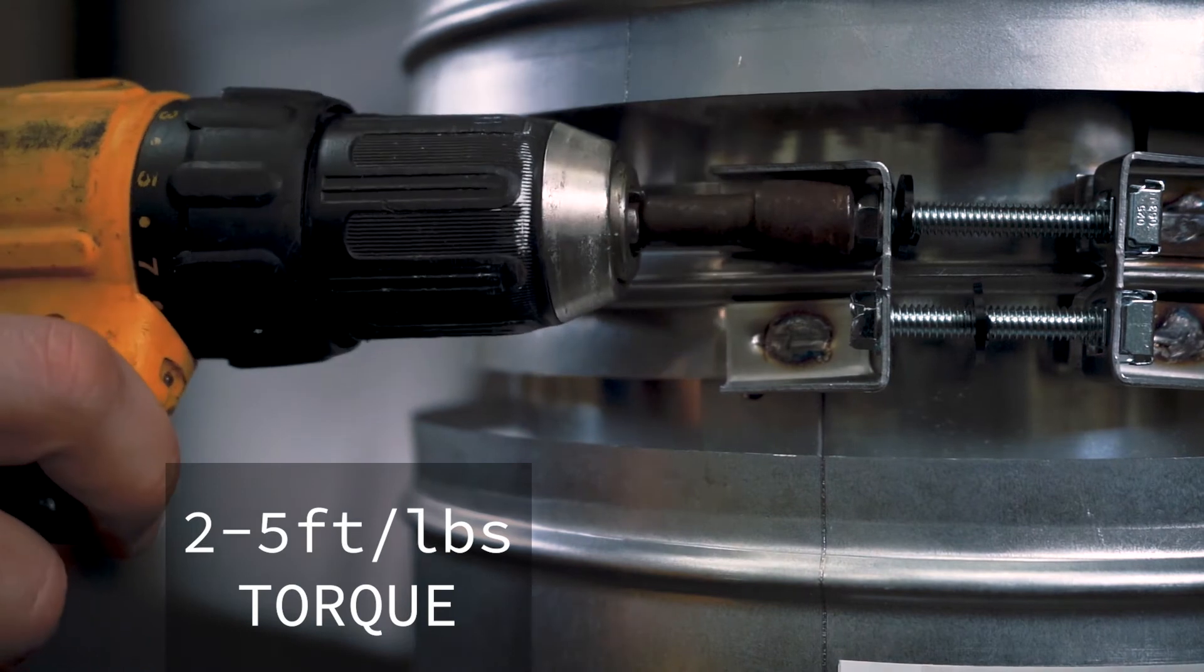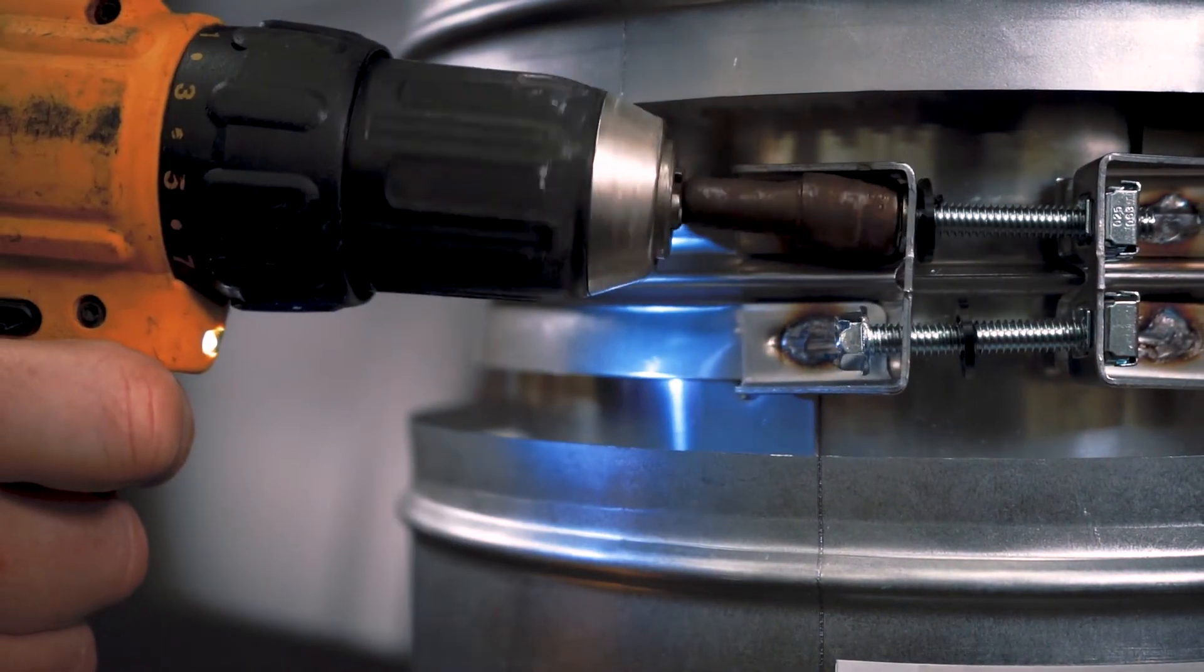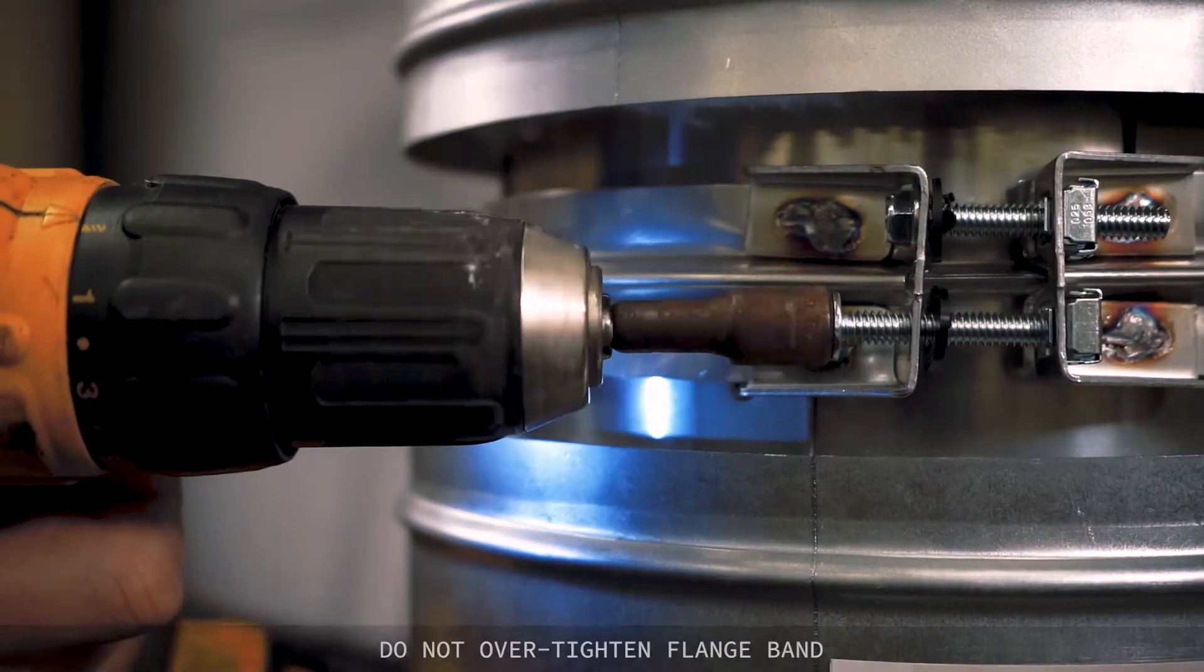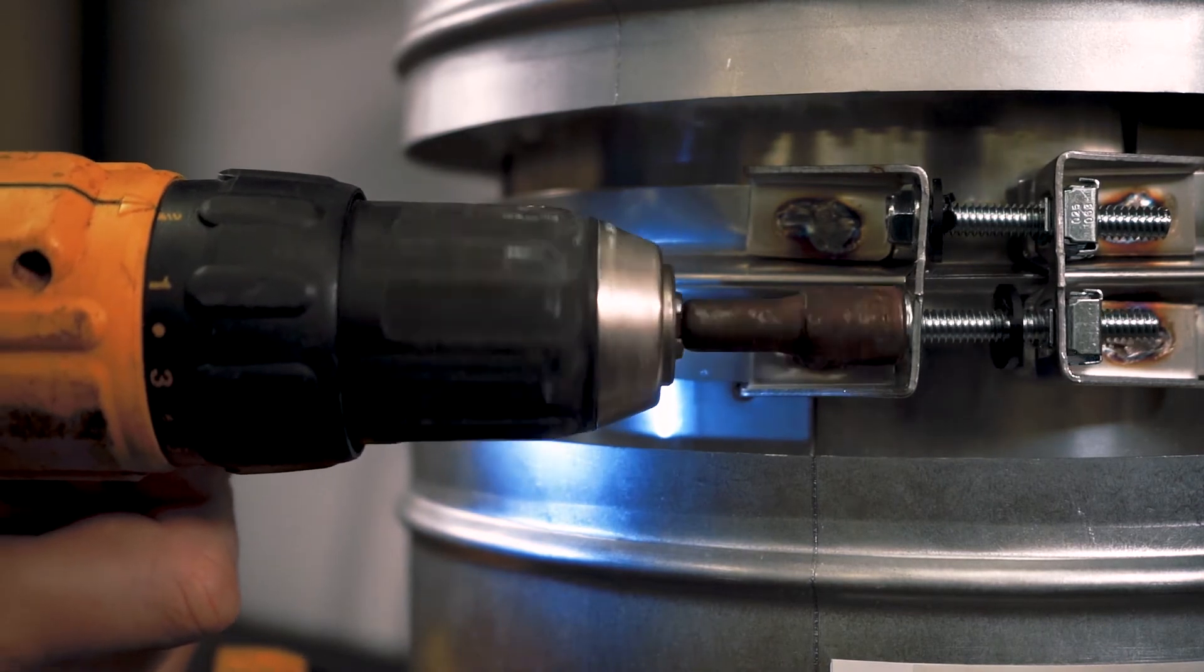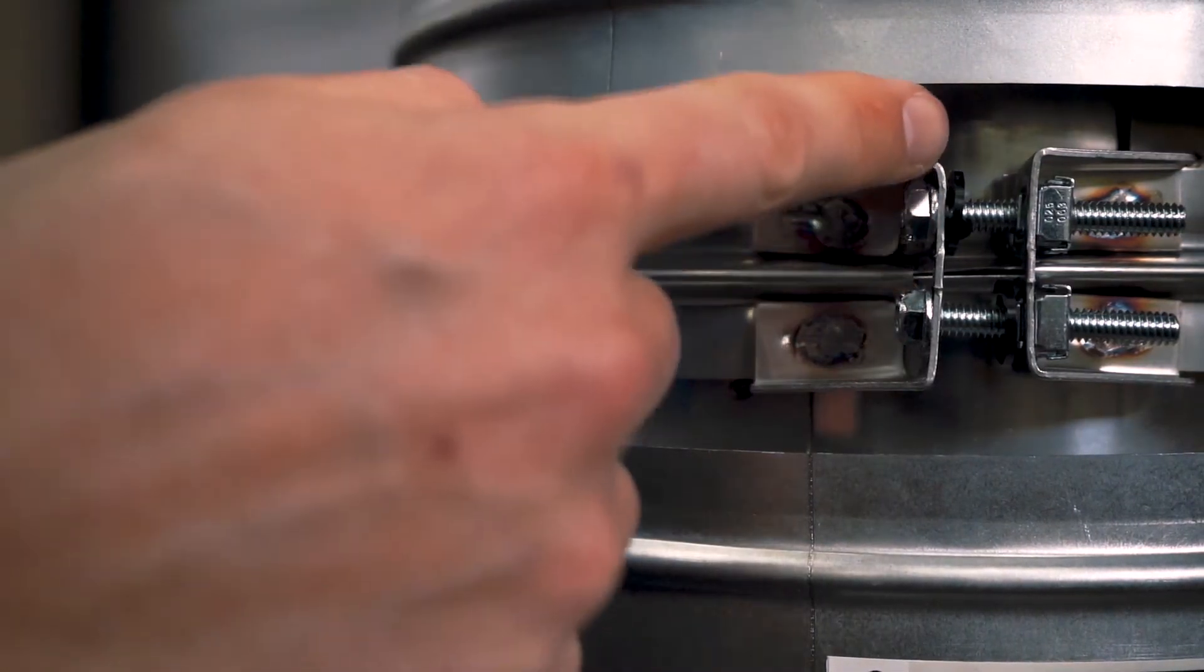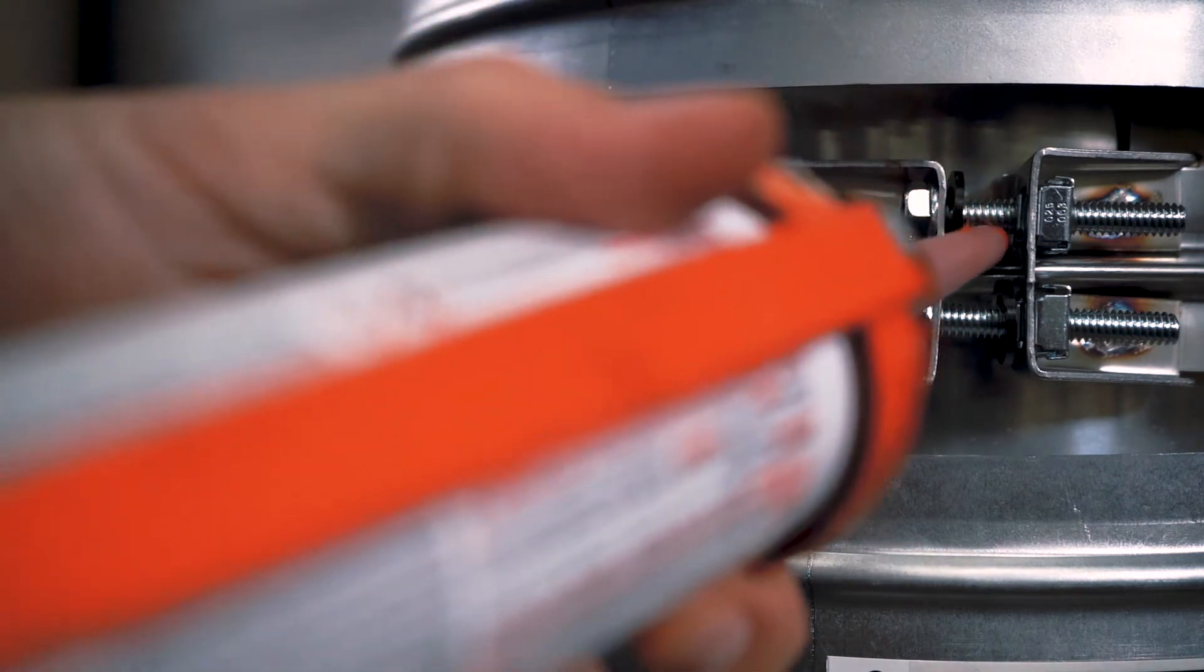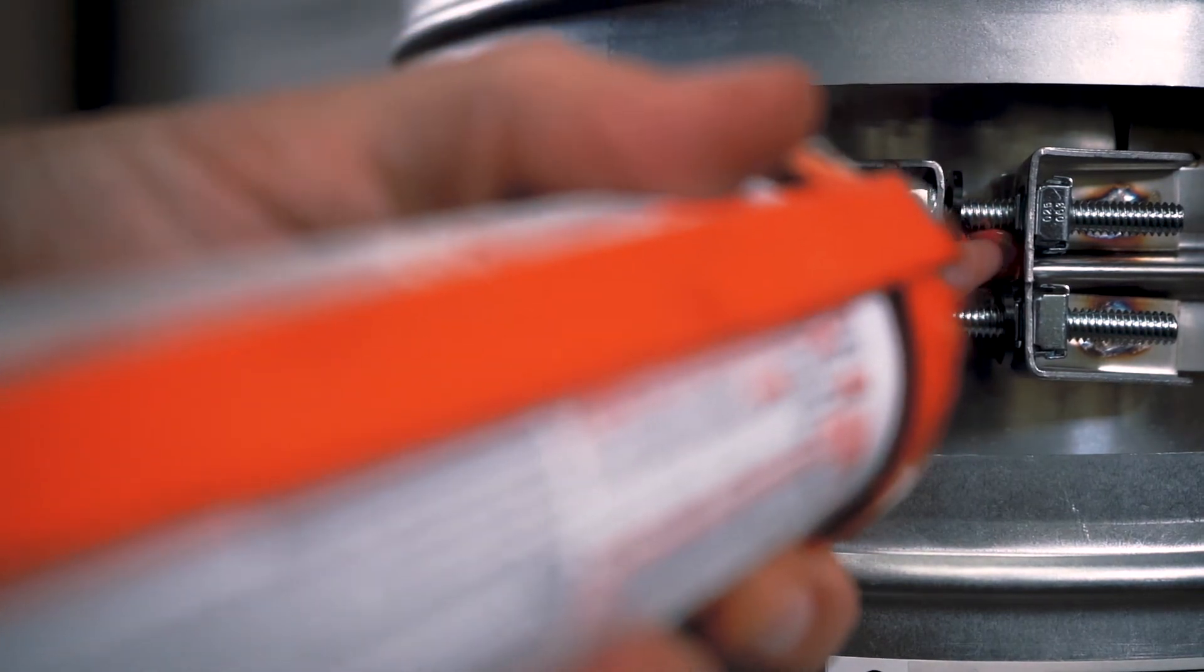Tighten the bolts between 2 and 5 foot pounds of torque. Do not over-tighten the flange band. When tightened appropriately, the two ends of the flange band brackets should not be touching. Fill the area between the bolts with sealant to ensure a leak-proof joint.